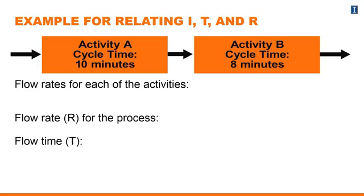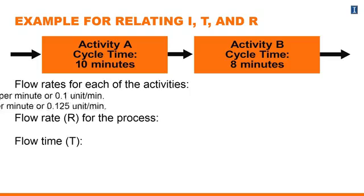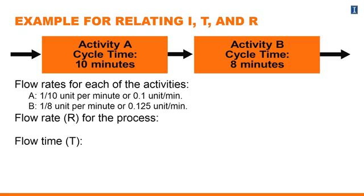The flow rate for each of these activities: cycle time of ten minutes means the flow rate is going to be the reciprocal, so it's going to be one-tenth of a unit per minute for A. And for activity B, cycle time of eight minutes, so the flow rate is going to be one-eighth of a unit per minute. So we have one-tenth of a unit per minute for A and one-eighth of a unit per minute for B.